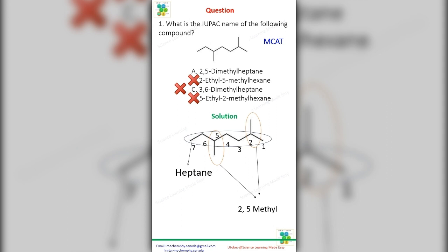Choice C is wrong because the position numbers of the substituents are not minimized. Hence the right answer is option A, that is 2,5-dimethylheptane.